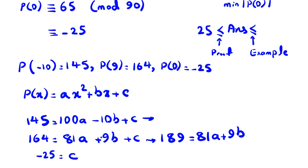And if you replace c with -25 and take -25 to the left hand side plus 25, 25 + 145 is 170. So it will be 100a minus 10b.